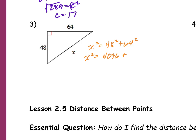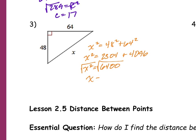Someone says 2,304 for 64 squared, but wait — I think it's the other way around. 64 squared is 4,096 and 48 squared — 2,304? X squared adds up to be 6,400. So square root, and X is going to equal 80.